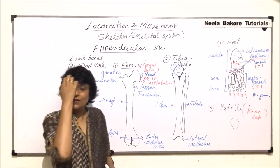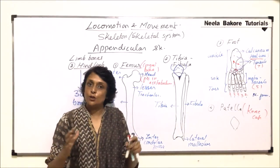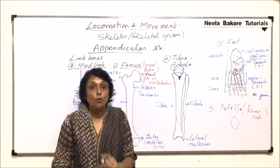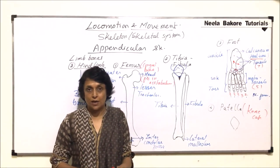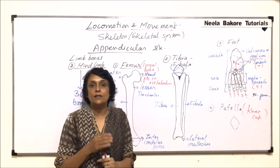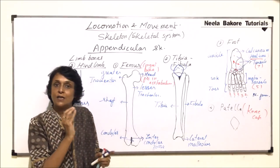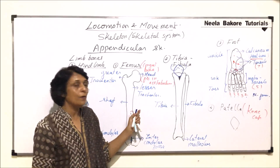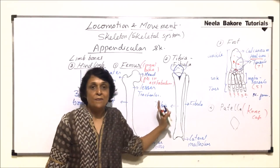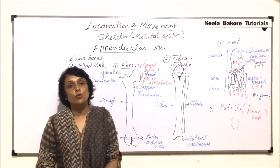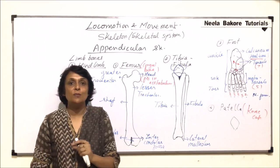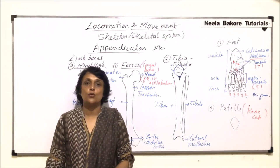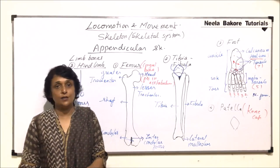Two hind limbs with thirty bones each, and two forelimbs with thirty bones each. This is how the number of bones are accounted for in the appendicular skeleton. The appendicular skeleton comprises the shoulder girdles (pectoral) and forelimbs, and the pelvic girdle and hind limbs. After this, using the model of the human skeleton, we will study all the bones of the appendicular skeleton.